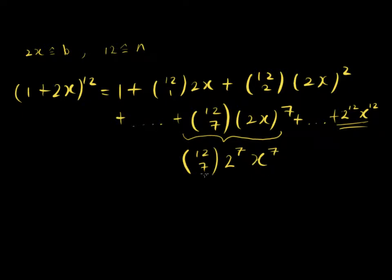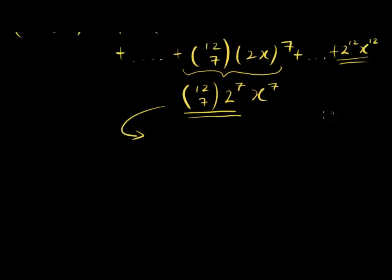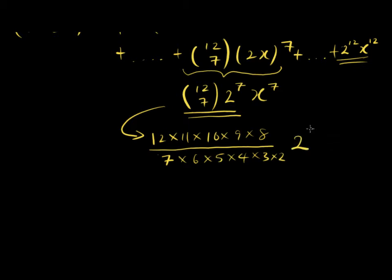So we can see that this column multiplied by 2 to the power of 7 is the coefficient of x to the power of 7. So let's write out the full expression for this coefficient. So it's actually nothing more than 12 multiplied by 11 multiplied by 10, divided by 7 factorial, which is 7 multiplied by 6 multiplied by 5, 4, 3, 2. And then this is 2 to the power of 7, which is 128.